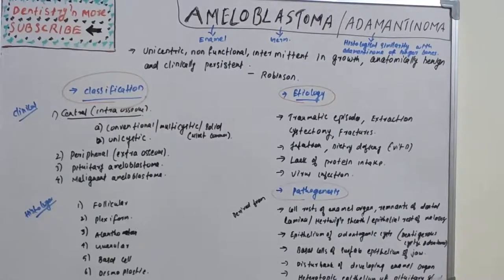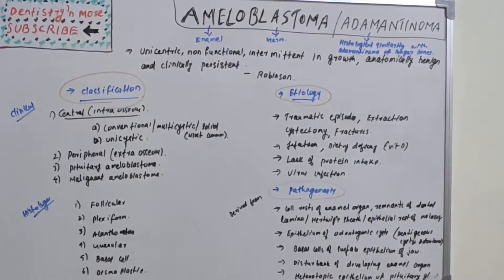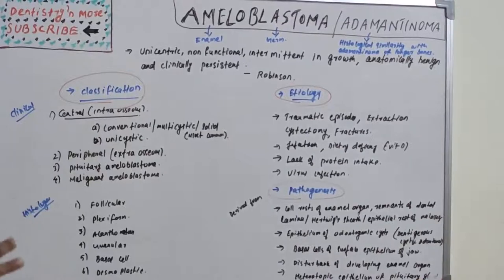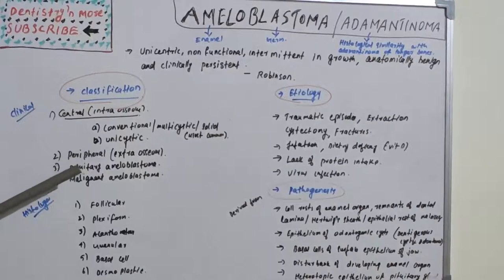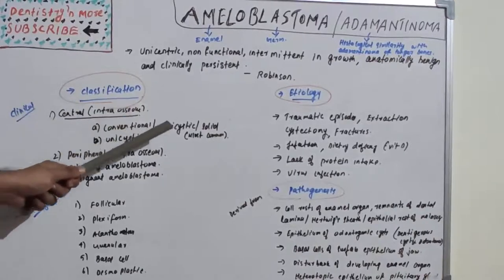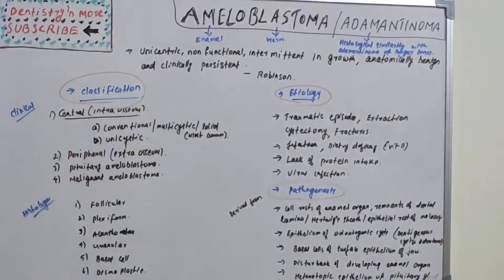In clinical classification, the most common is the central variant, which is the intraosseous type. In intraosseous type we have two subtypes: multicystic (conventional/solid) — the most common — and unicystic. Other clinical types include extraosseous or peripheral, pituitary ameloblastoma, and malignant ameloblastoma.